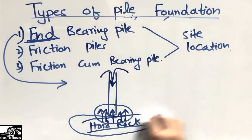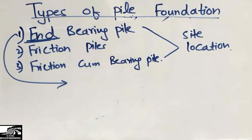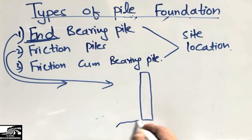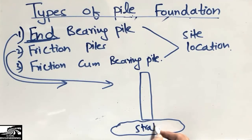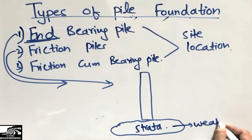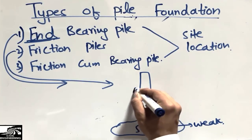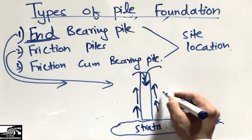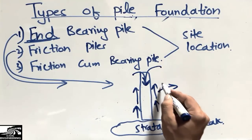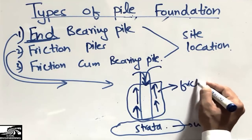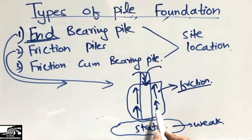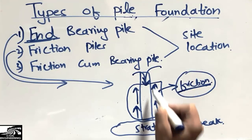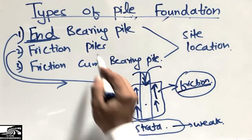The second type is the friction pile. Friction piles are used where the hard rock strata is absent or the strata of the soil is weak. In this case, the whole resistance to the load of the pile is provided by the friction along the sides of the pile. We call this type the friction pile because the entire resistance is offered by the sides through the friction method.